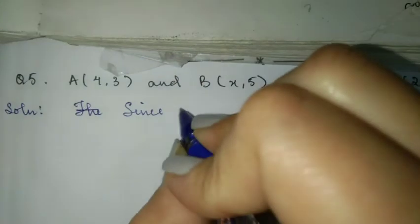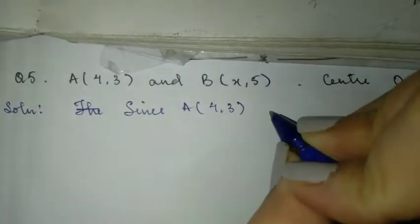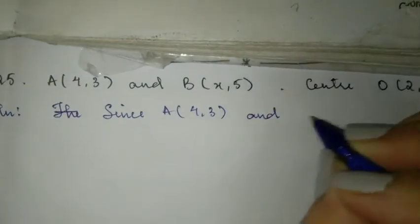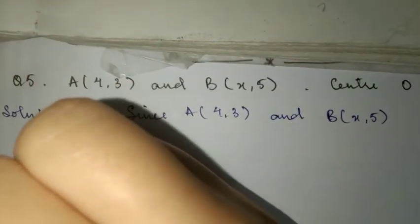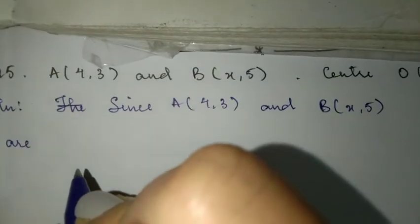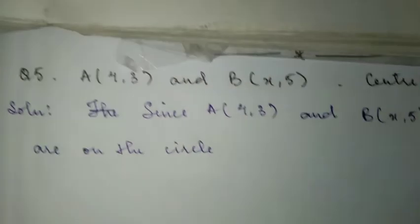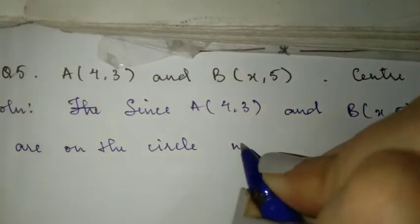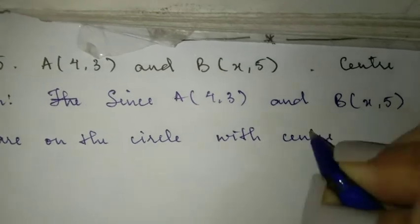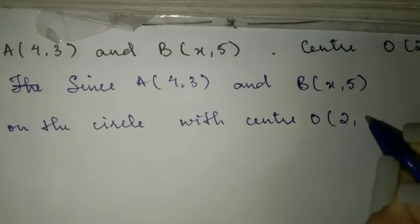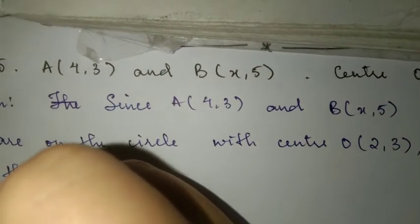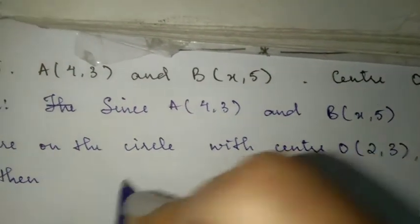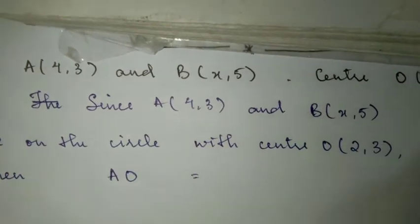Now, since A and B are on the circle with center O, then we know that the distance between AO and BO will be the same, right? So, we have AO is equal to BO.